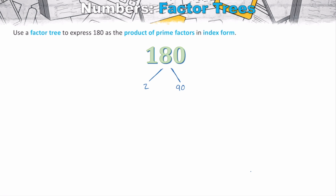Two is now prime so we can leave that branch and focus on 90. Since 90 is still composite and divisible by two, we divide 90 by two to get 45. Now 45 can no longer be divided by two, so we move to the next smallest prime, which is three. Forty-five divided by three gives us 15. We then check: is 15 prime? No — we can divide 15 by three again, leaving us with five.